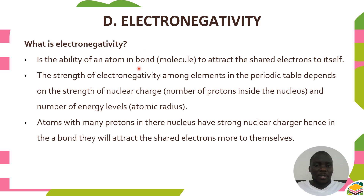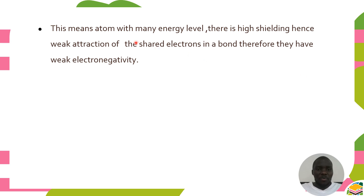Electronegativity works in a bond. The strength of electronegativity among elements in the periodic table depends on the strength of nuclear charge — that is, the number of protons in the nucleus — and the number of energy levels, which relates to atomic radius. Atoms with many protons have strong nuclear charge and attract shared electrons more strongly in a bond. Atoms with many energy levels have high shielding, hence weak attraction of shared electrons, giving them weak electronegativity. This always works in a covalent bond where electrons are shared.